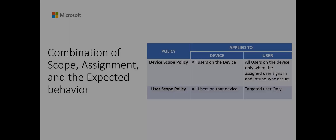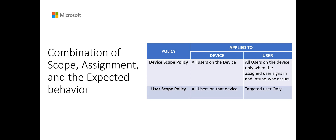Here is a quick view of the combination of scope, assignment, and the expected behavior for a policy. If a device scope policy is assigned to a device, then all users on that device have the setting applied and the device scope settings apply to all users on that device. If a user scope policy is assigned to a device, then all users on that device have that setting applied.